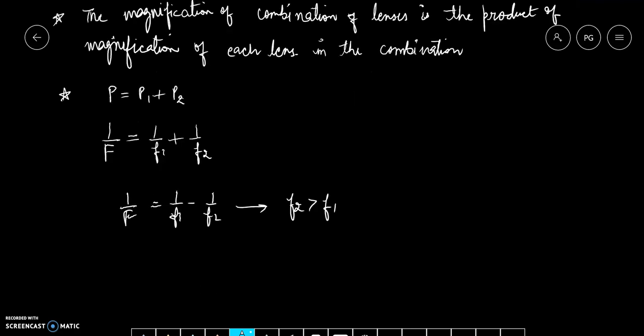Now if F2 is greater than F1, then in this case focal length of the combination will be positive. It means this is going to behave like a convex lens. And if it's inverse, F1 is greater than F2, then in this case it is going to be negative. Capital F will be negative and the combination is going to behave like a concave lens.